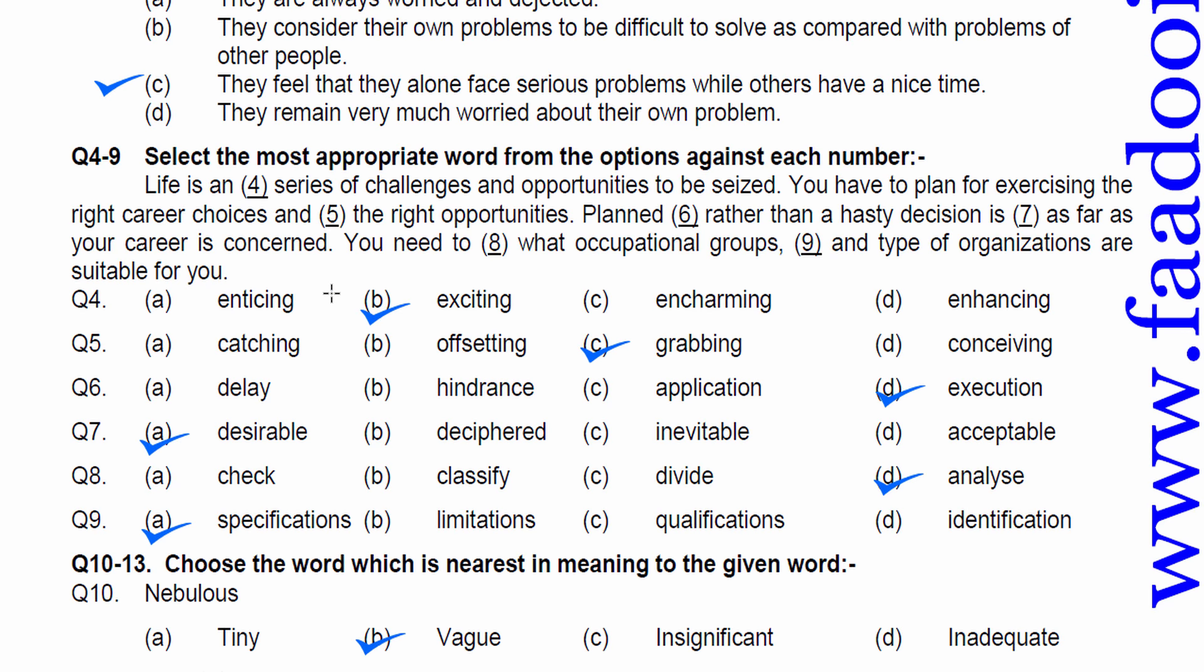4 to 9. Select the most appropriate word from the options against each number. Life is in dash. So, first of all, we will study the passage to give us an idea about the passage. Life is in series of challenges and opportunity to be seized. You have to plan for exercising the right career choices and dash the right opportunities. Planned rather than a hasty decision is dash as far as your career is concerned. You need to dash what occupational groups and types of organizations are suitable for you. So, we got an idea. It is a positive passage. So, we will use positive words. Number fourth, life is in dash, it should be exciting. Grabbing opportunities. We grab opportunities. Planned execution. Whenever we execute something, it must be planned to get desired result. Desirable, that is needed. Analyze because we are talking about career. We have to dig about what's right for us. Ninth would be specifications because you have to choose amongst different needs you are aspiring to.